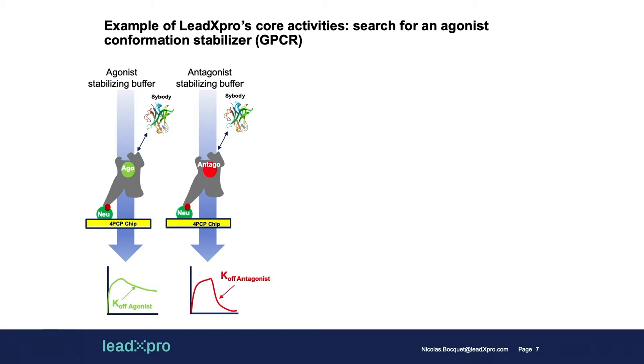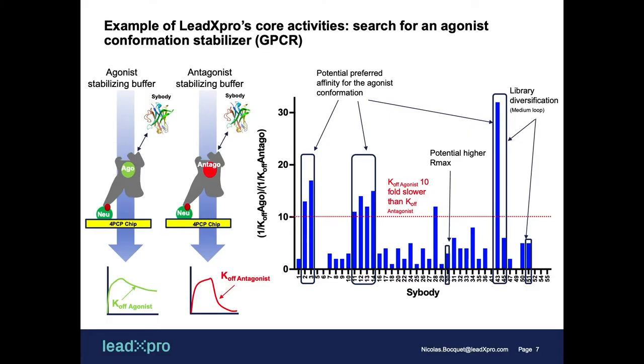We screened on these two different setups the same set of different nanobodies. The key parameter we were monitoring was the KOff. If a nanobody binds better to the agonist conformation, usually the KOff is slower than if it binds less well to the antagonist conformation. Here are histogram plots where we actually see where the binders have a tenfold potentially better affinity on the agonist conformation compared to the antagonist conformation. With this plot we can select the best binders in order to make a detailed characterization of them later on. There were too many nanobodies to do a detailed characterization first — we needed to screen first.